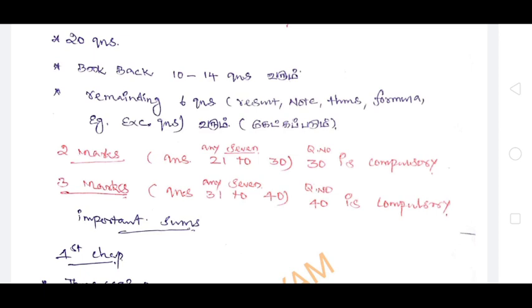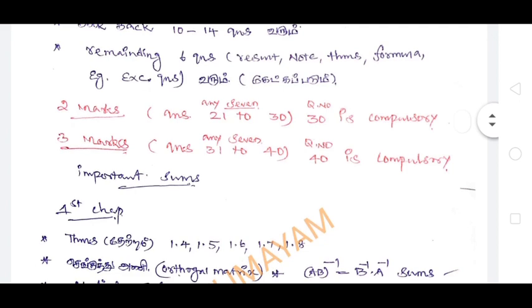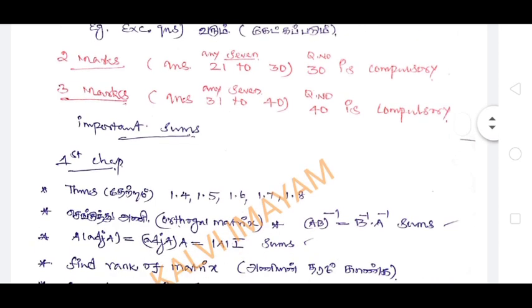There are 10 questions in the book. This is a creative question. If you want to read question number 21 to 30, there are 2 marks questions, it is compulsory. The 3 marks questions are also compulsory.